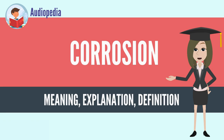Corrosion degrades the useful properties of materials and structures, including strength, appearance, and permeability to liquids and gases. Many structural alloys corrode merely from exposure to moisture in air, but the process can be strongly affected by exposure to certain substances.